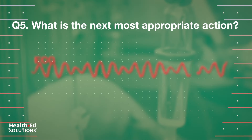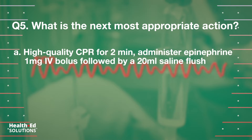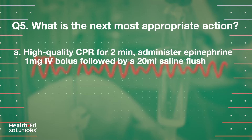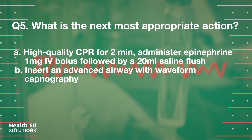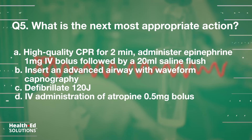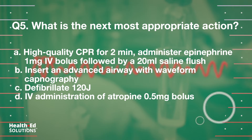Question 5: What is the next most appropriate action? A. High-quality CPR for 2 minutes; administer epinephrine 1 mg IV bolus, followed by a 20 ml saline flush. B. Insert an advanced airway with waveform capnography. C. Defibrillate 120 joules. D. Intravenous administration of atropine, 0.5 mg bolus.